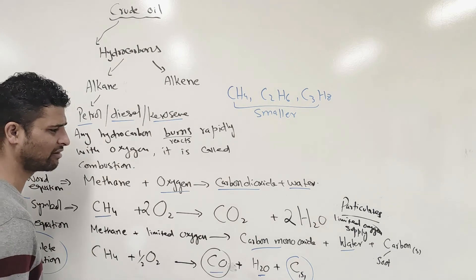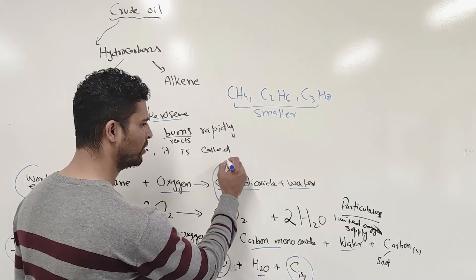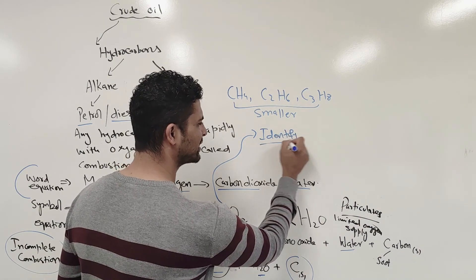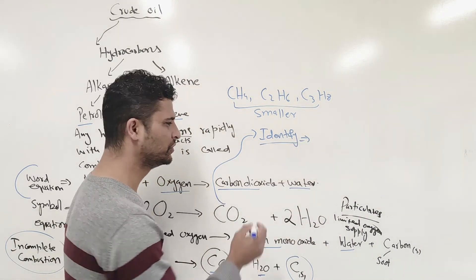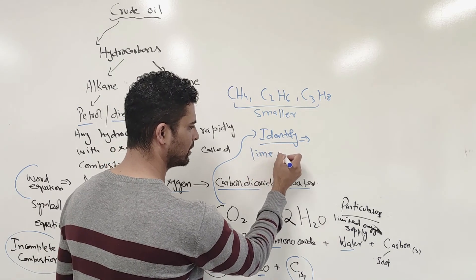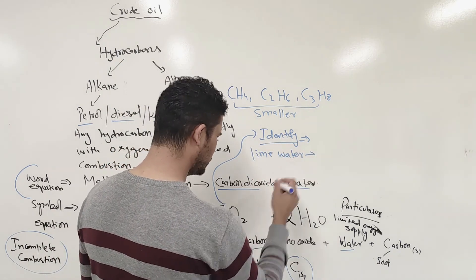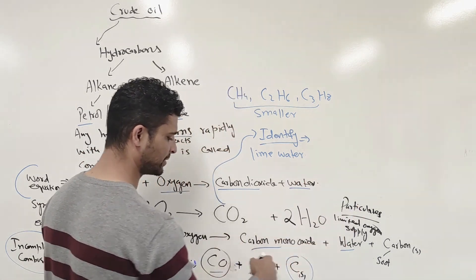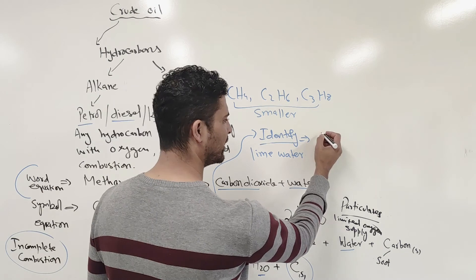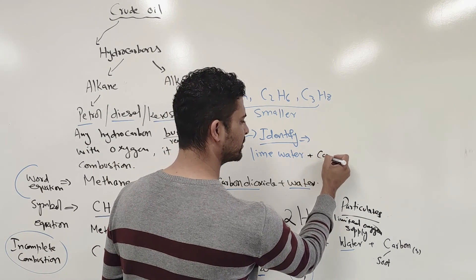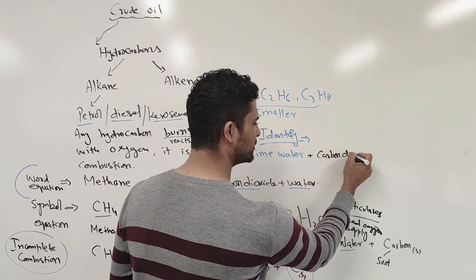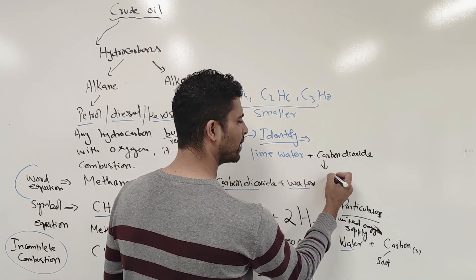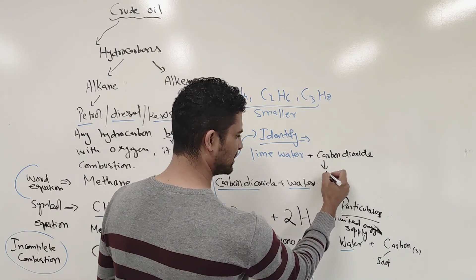Now the last thing is carbon dioxide - how you identify this gas. To identify it, you can use lime water. When you've produced carbon dioxide in the whole process, lime water will combine with carbon dioxide and produce a milky colour.